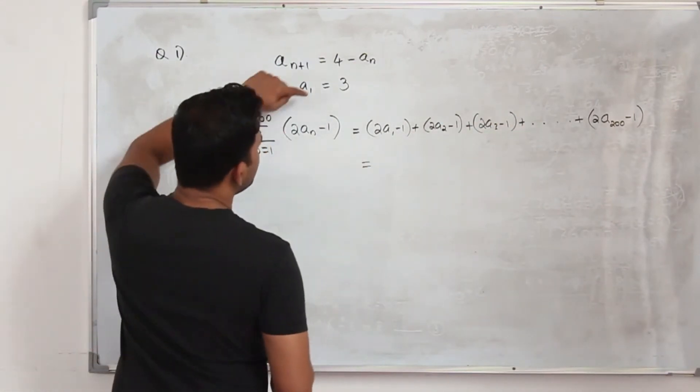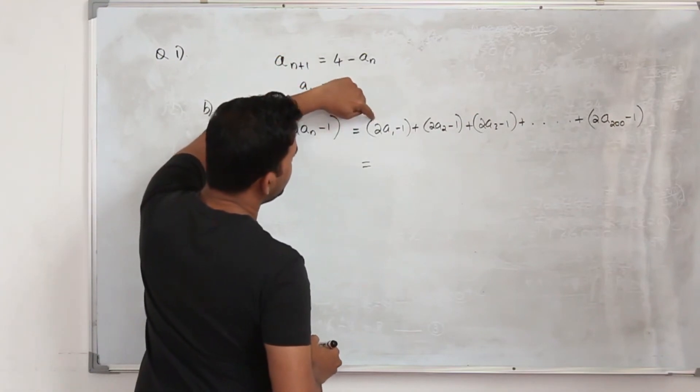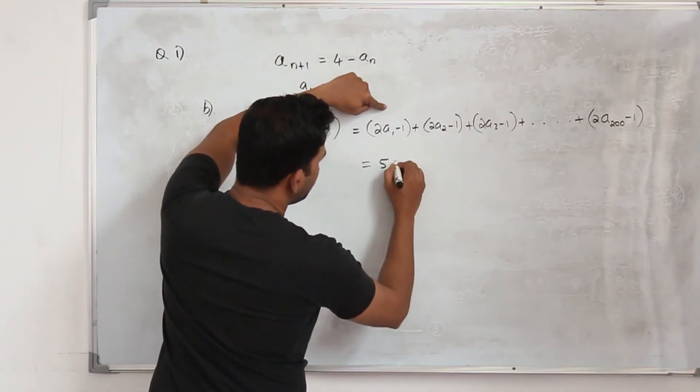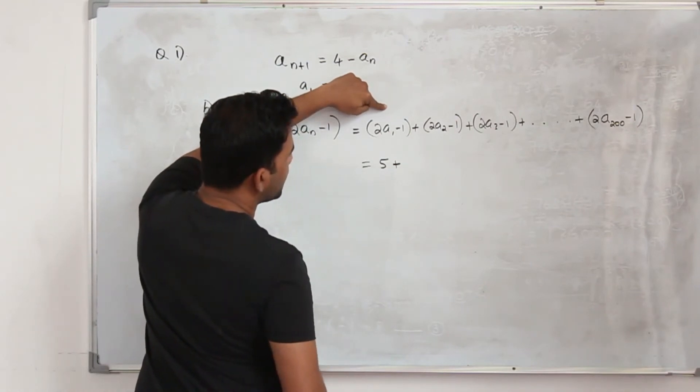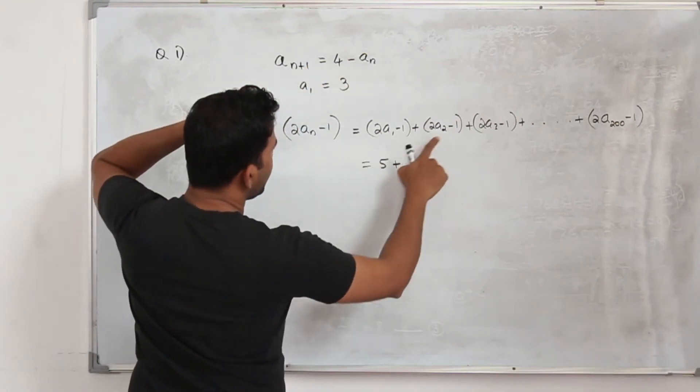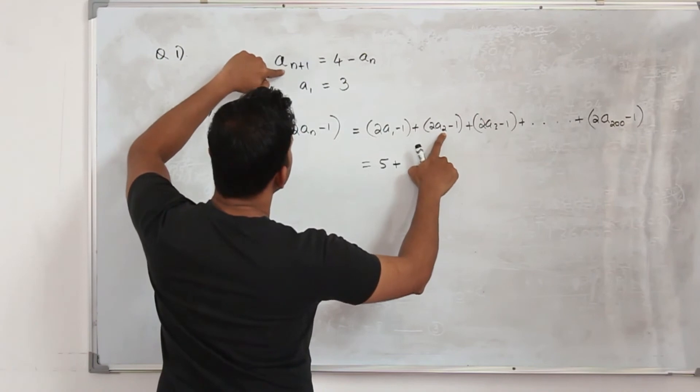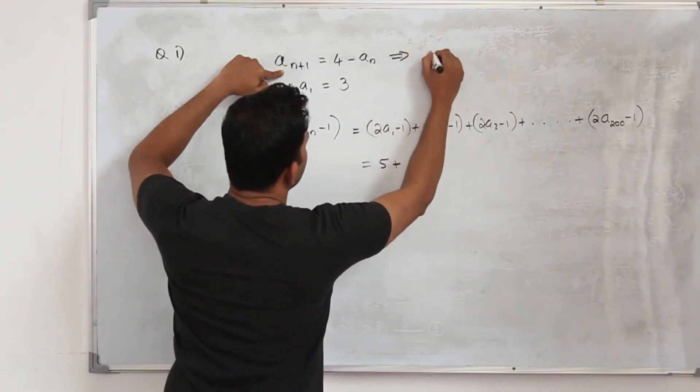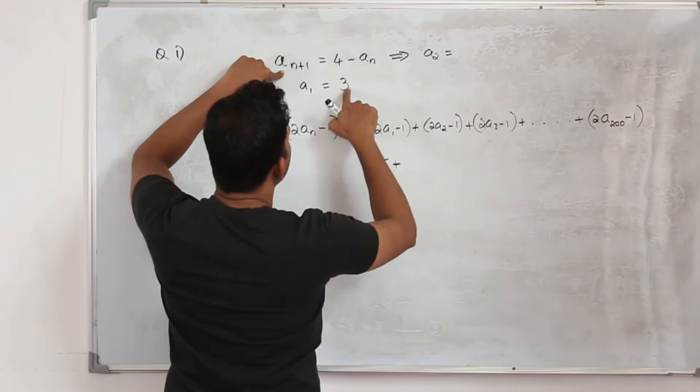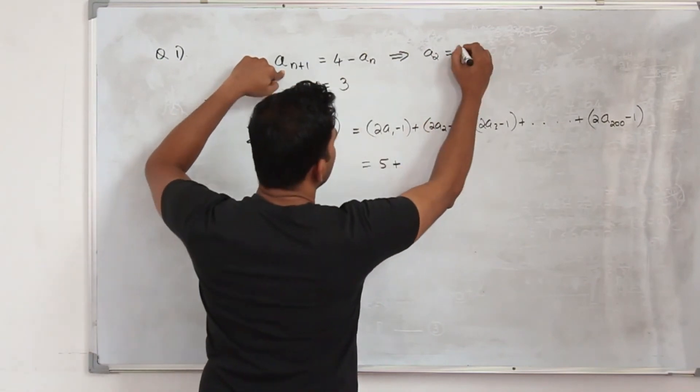First one: when you substitute a₁ is equal to 3 here, it will be 6 minus 1, which is 5, plus—and when you substitute your a₂, your a₂ is from here, your a₂ will be 4 minus a₁, which is 1.